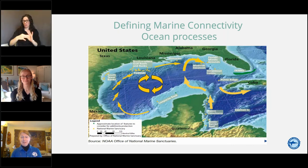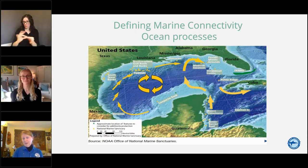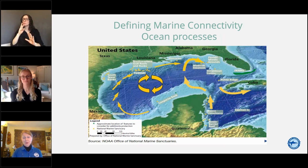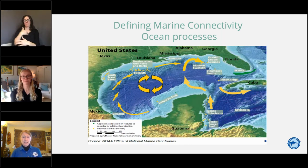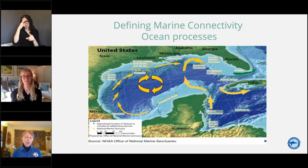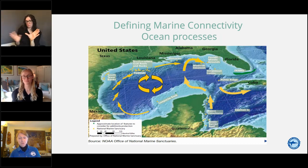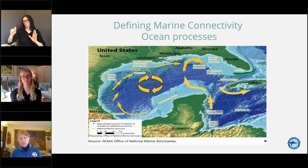Here is a simple illustration of connectivity showing, in this case, currents and a gyre in the center where probably we have a lot of plastics. This is the Gulf of Mexico. You will see that the Gulf is not isolated — connectivity functions move from outside the Gulf to the Straits of Florida, into the Gulf, and then back out to the Atlantic.